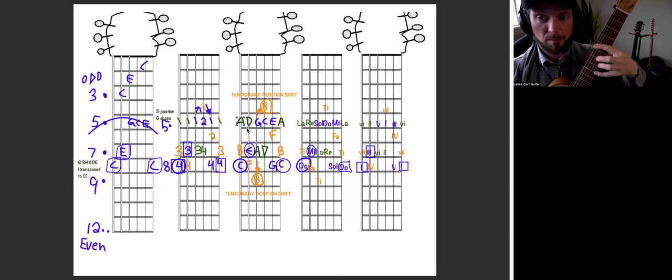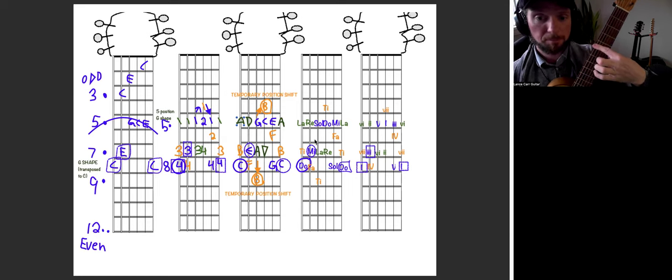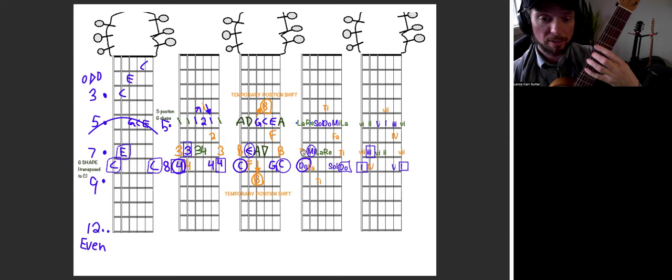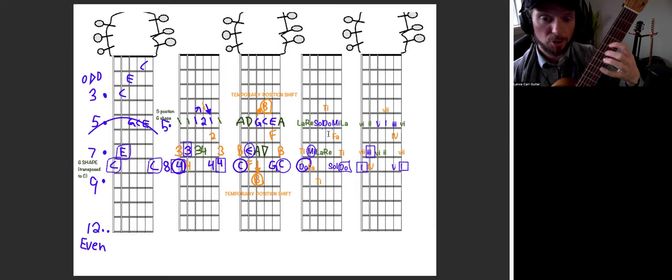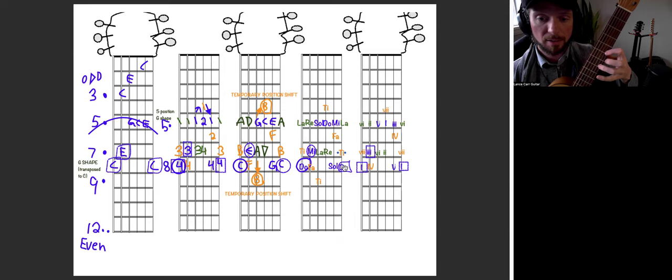Let's do the solfege. Starting from the big string, we'll say La, Ti, Do, Re, Mi, Fa, Sol, La, and then the Ti would be back. Do, Re, Mi, Fa, Sol, La, Ti, Do.